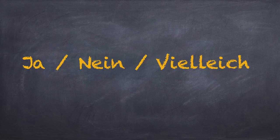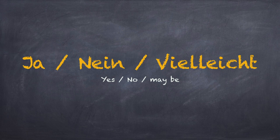Coming to the three most important words in the language: Ja, nein, vielleicht. Please notice, the J has the sound of 'ya' — Ja. Nein — that's like the English number nine. Vielleicht — again, the V has the sound of F.